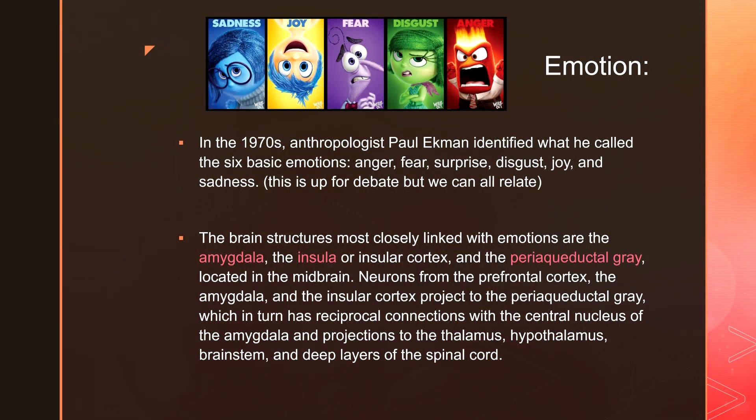In the 1970s, anthropologist Paul Ekman identified what he called the six basic emotions: anger, fear, surprise, disgust, joy, and sadness. There may be other emotions, but these are the main ones to know for now. Feel free to look up others you find interesting.